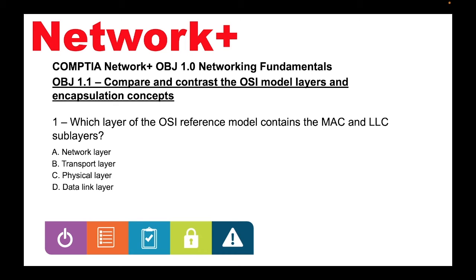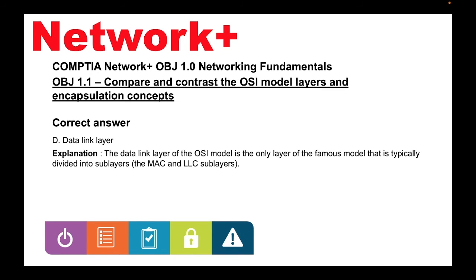Question 1: Which layer of the OSI reference model contains the MAC and LLC sublayers? A. Network layer, B. Transport layer, C. Physical layer, D. Data link layer. The correct answer is D, Data link layer. The data link layer of the OSI model is the only layer that is typically divided into sublayers: the MAC and LLC sublayers.